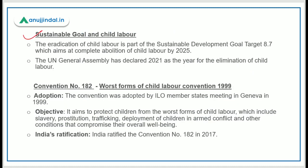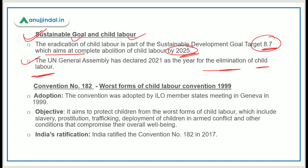The eradication of child labour is also part of the Sustainable Development Goals — Target 8.7 — which aims at complete abolition of child labour by the year 2025. The UN General Assembly has declared a specific year as the Year of the Elimination of Child Labour.